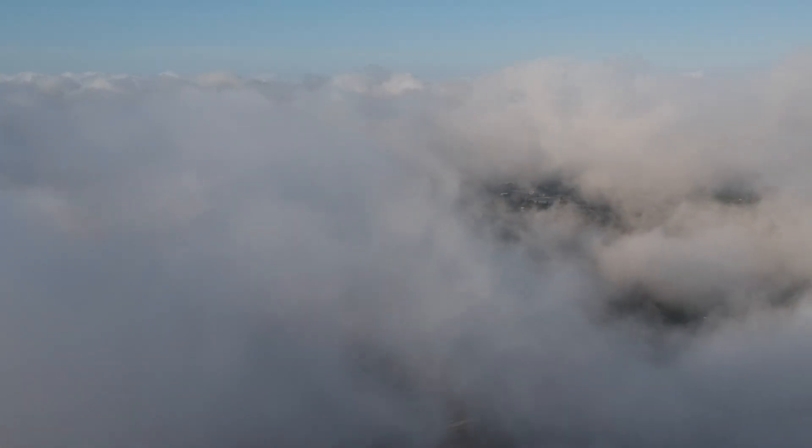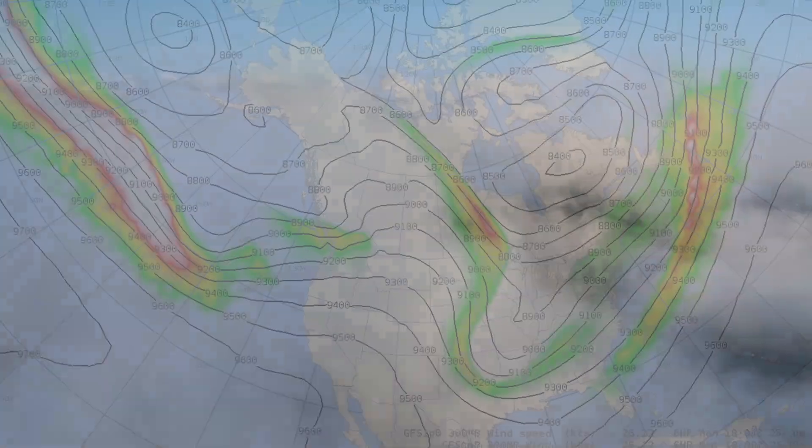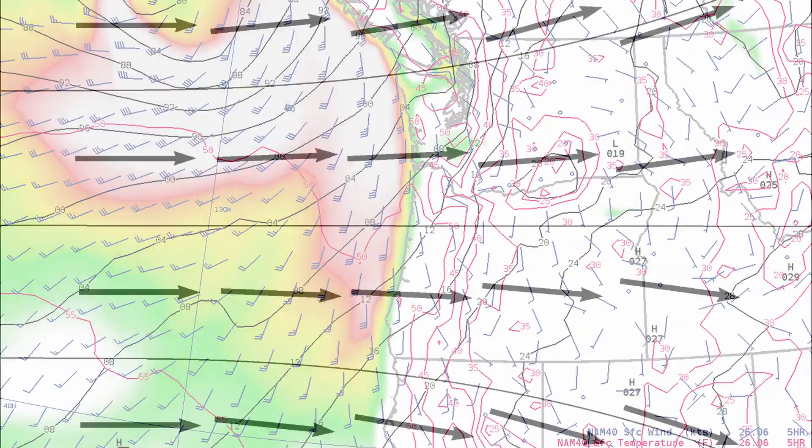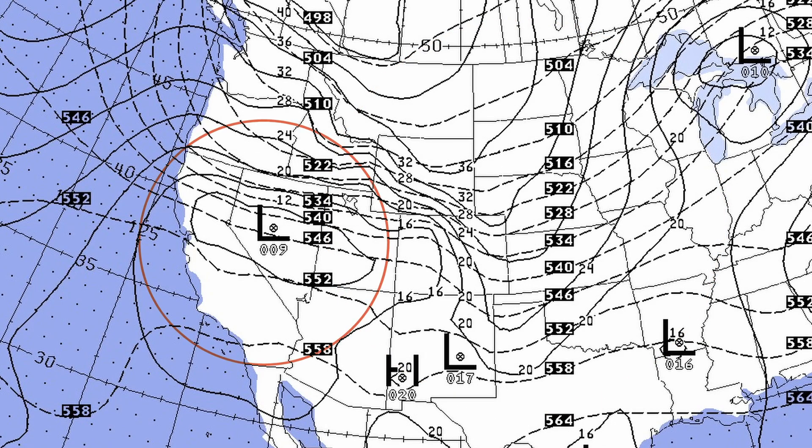High above the land and sea, air diverges quietly. As it spreads, it leaves us space, lower pressure takes its place.